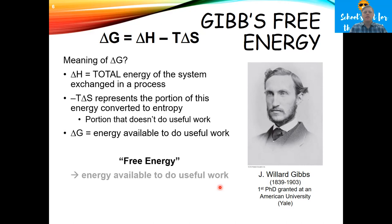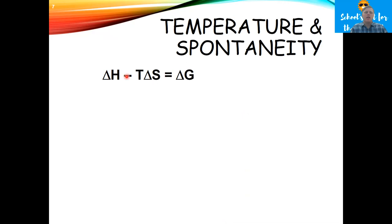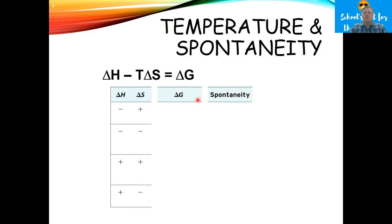This equation helps us predict when endothermic and exothermic reactions are going to be spontaneous, and why some are spontaneous while others are not. Delta H and delta S can each be positive or negative, giving us four scenarios: delta H negative with delta S positive, delta H negative with delta S negative, delta H positive with delta S positive, and delta H positive with delta S negative.